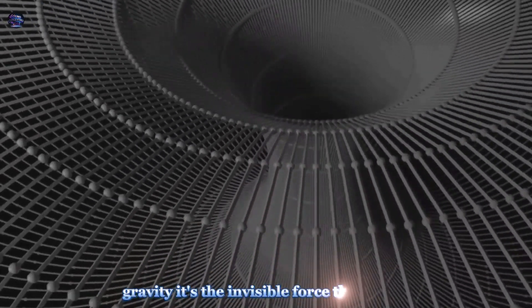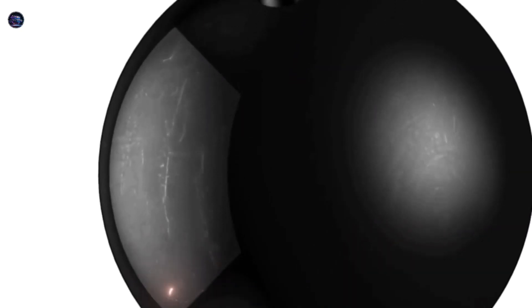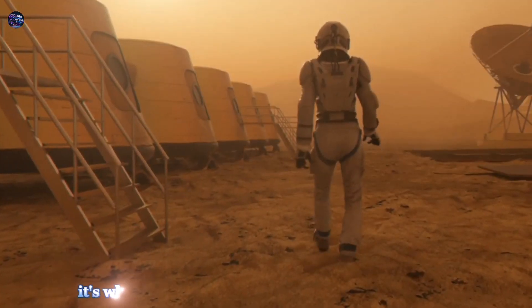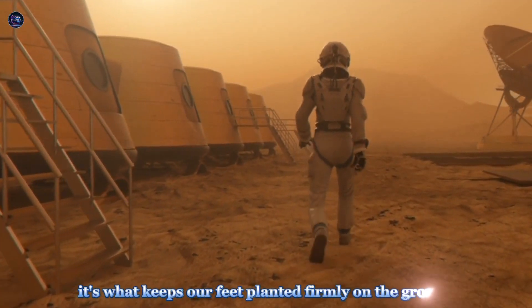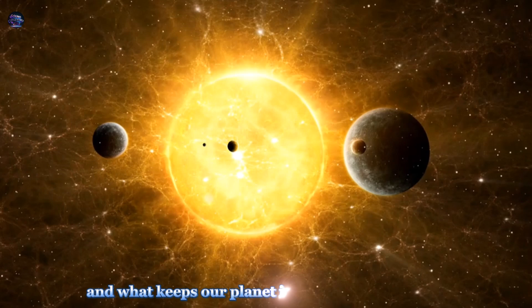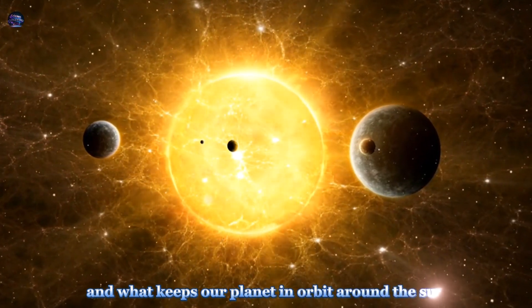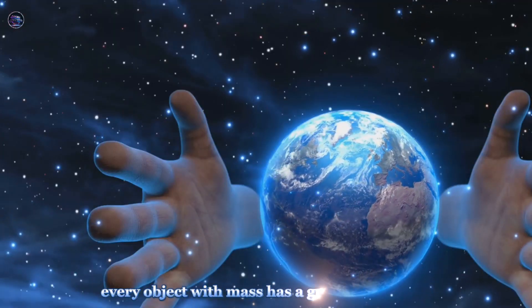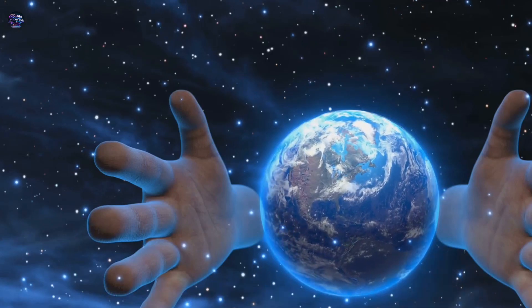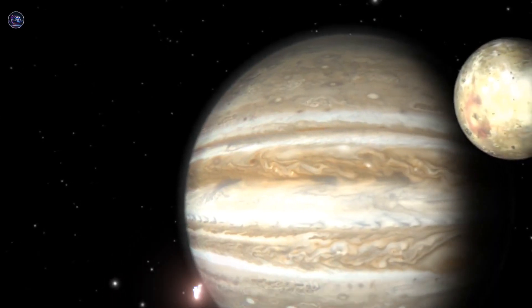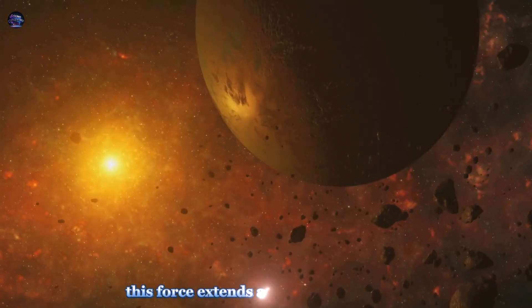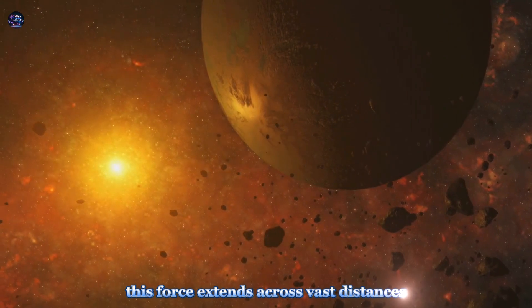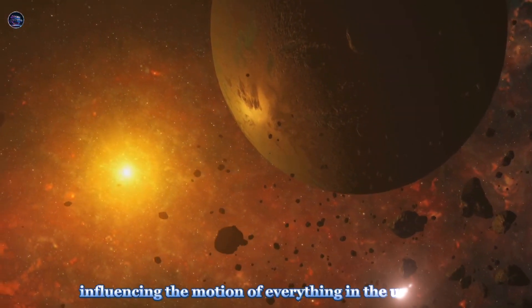Gravity. It's the invisible force that draws objects towards each other. It's what keeps our feet planted firmly on the ground and what keeps our planet in orbit around the sun. Every object with mass has a gravitational pull. The more massive the object, the stronger its pull. This force extends across vast distances, influencing the motion of everything in the universe.